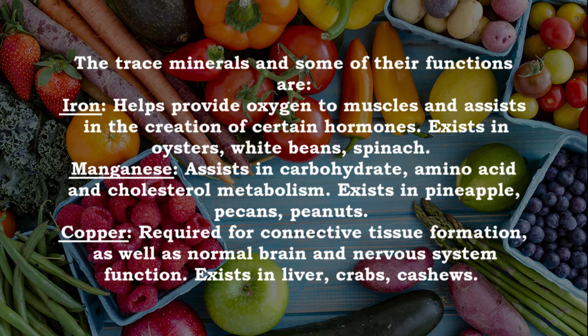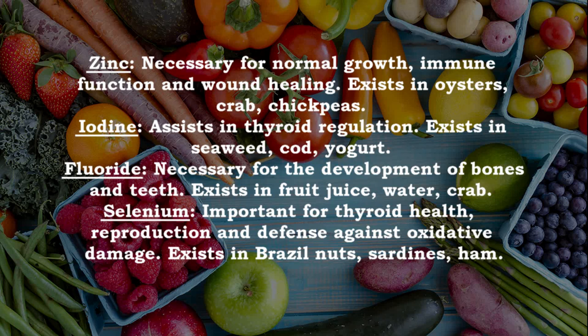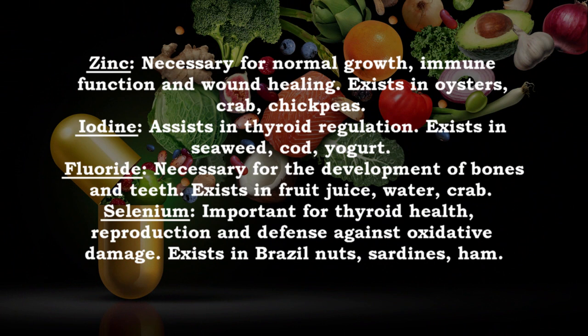Zinc — necessary for normal growth, immune function, and wound healing; found in oysters, crab, and chickpeas. Iodine — assists in thyroid regulation; found in seaweed, cod, and yogurt. Fluoride — necessary for the development of bones and teeth; found in fruit juice, water, and crab. Selenium — important for thyroid health, reproduction, and defense against oxidative damage; found in Brazil nuts, sardines, and ham.